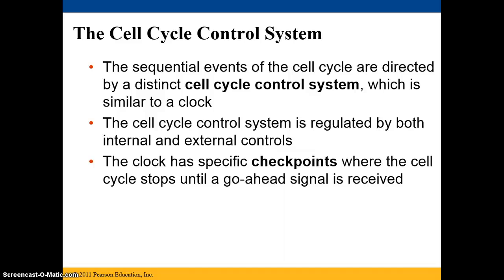The sequential events of the cell cycle are directed by a distinct cell cycle control system, similar to a clock or biorhythm. This system is regulated by internal and external controls, and the clock has checkpoints where the cell cycle stops until it gets the signal to go ahead — much like a factory where a quality assurance officer can halt everything until a problem is corrected.